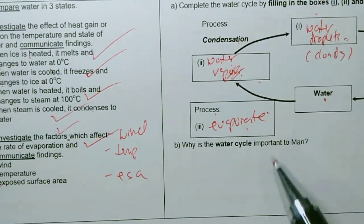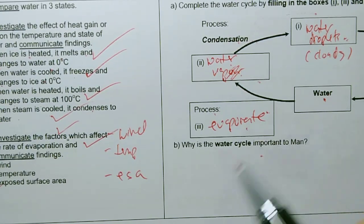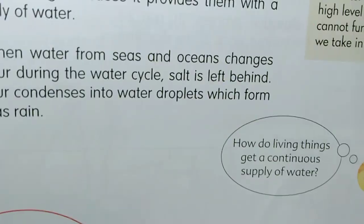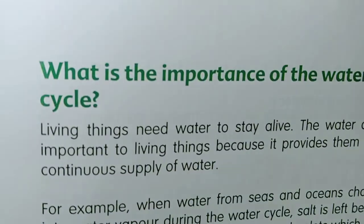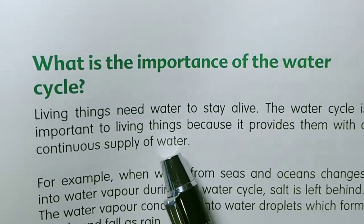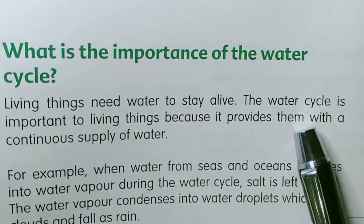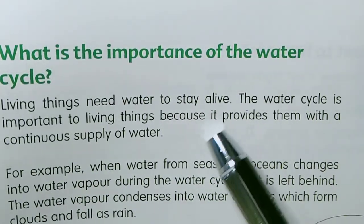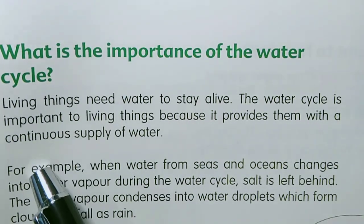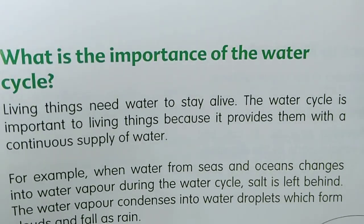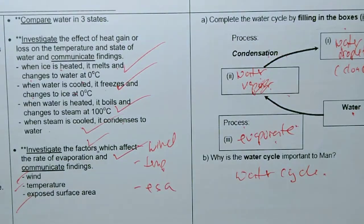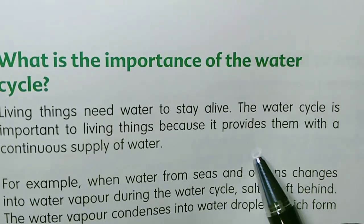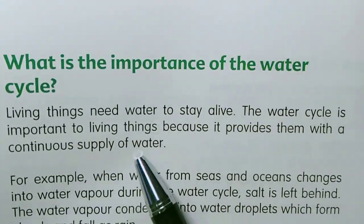Why is the water cycle important to men? Water cycle is important because living things need water to survive, and the water cycle is important to living things because it provides us with a continuous supply of fresh water. That is the answer for this question. Why is water cycle important to men? Because it provides men with a continuous supply of water.